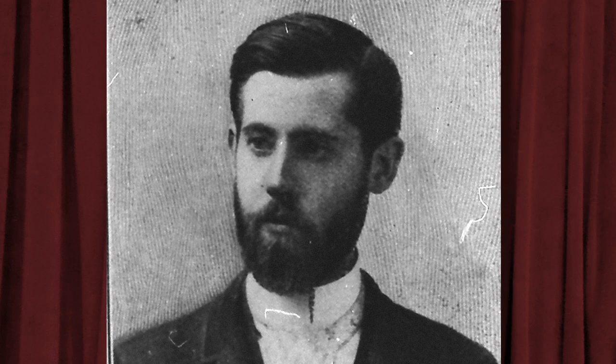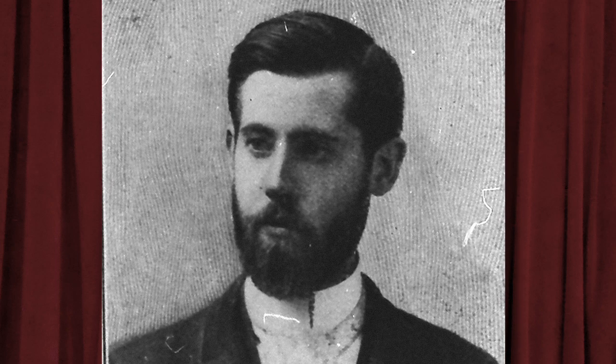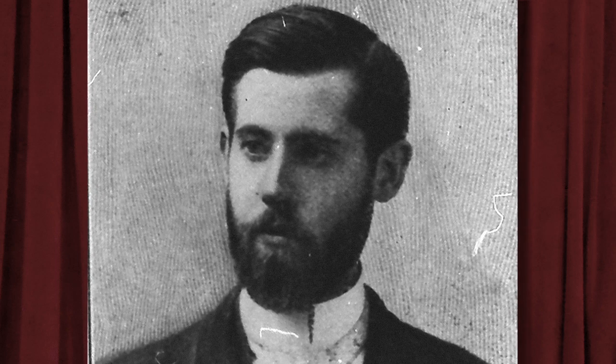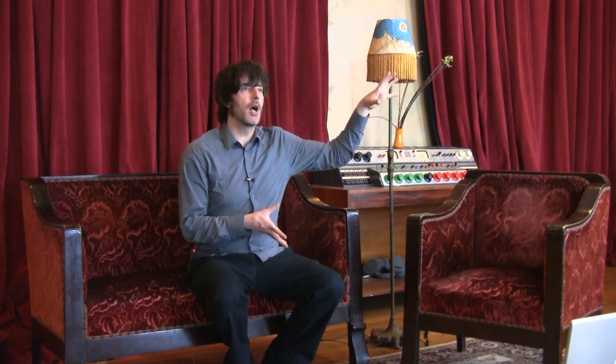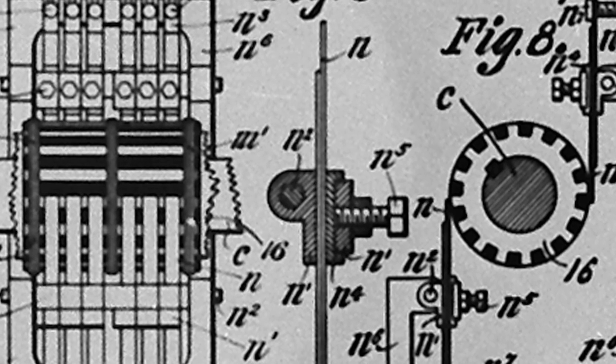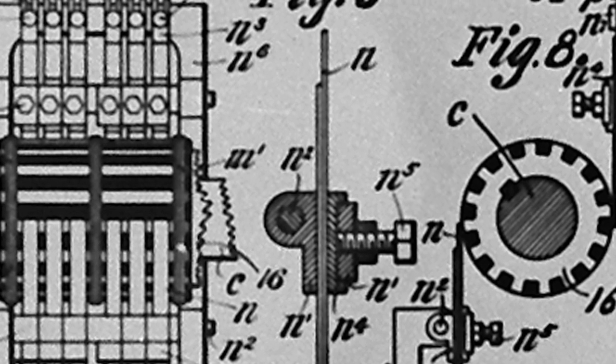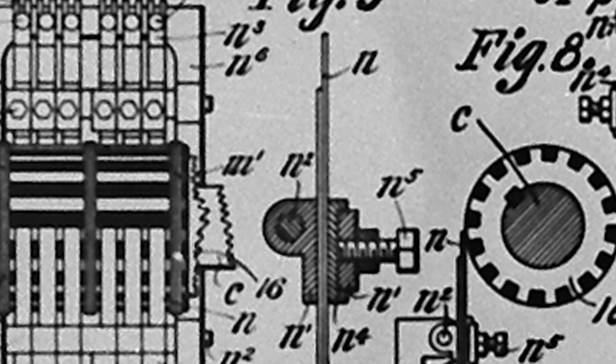That was the thinking of Thaddeus Cahill, inventor and musician around the turn of the 20th century. He had the idea that if you took a giant cog and rotated it next to an electromagnetic receiver, you would basically be able to wiggle electrons in sine wave shapes.